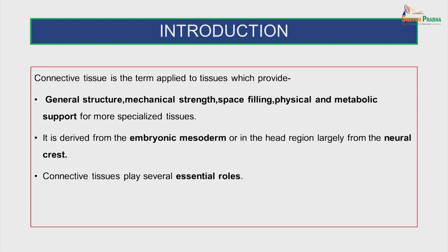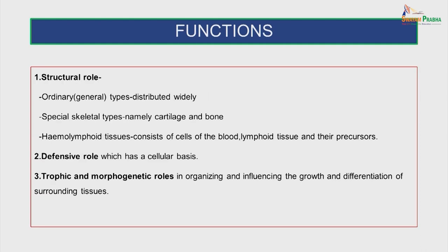Connective tissue is the term applied to tissues which provide general structure, mechanical strength, space filling, physical and metabolic support for more specialized tissues. It is derived from the embryonic mesoderm or in the head region largely from the neural crest. Connective tissue plays several important roles: a structural role done by the ordinary types widely distributed; the special skeletal types namely cartilage and bone; the hemolymphoid tissues consisting of cells of the blood, lymphoid tissue and their precursors; a defensive role with a cellular basis; and trophic and morphogenetic roles in organizing and influencing the growth and differentiation of surrounding tissues.